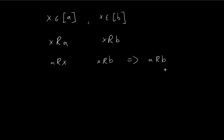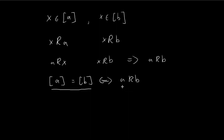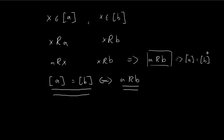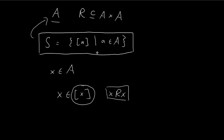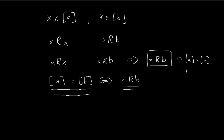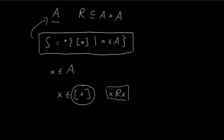We now invoke a result proved in our previous video: class A equals class B if and only if A is related to B. Since we've just shown A is related to B, this immediately implies class A equals class B, which is exactly what we wanted to prove. So not only does X belong to at least one set in S, but it belongs to exactly one class in S — which effectively proves that S is a partition of A.